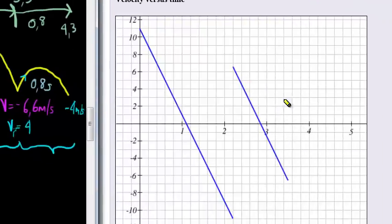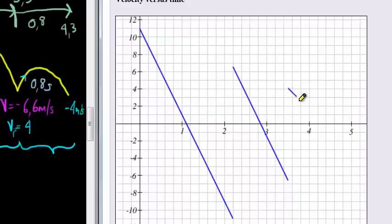So I'm at 3.5 and 4. And then I go from 3.5 seconds to 4.3 seconds, which is there, but also to negative 4 meters per second. There we go.